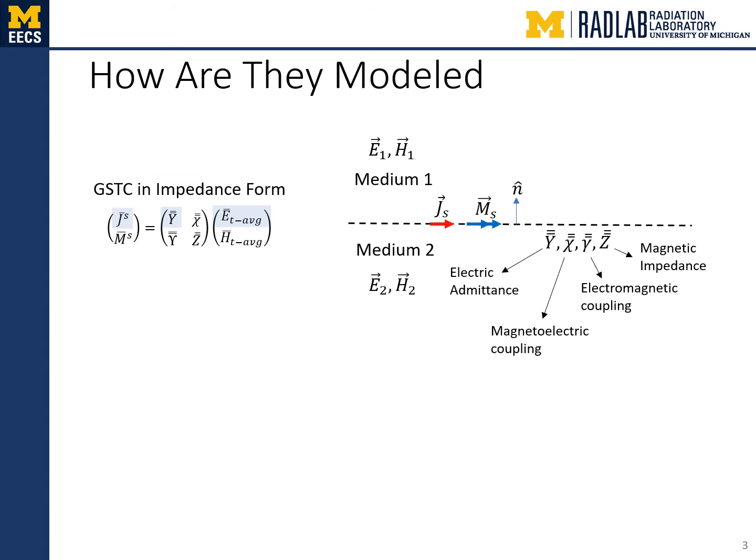The tensor sheet impedance connects the induced surface current densities to the tangential averaged fields. In a general bianisotropic metasurface, electric surface currents are excited by not only the tangential electric fields, but also magnetic fields. Similarly, magnetic surface currents are excited by both electric and magnetic fields. This leads to the matrix equation shown in the left half of the slide. This boundary condition is known as the generalized sheet transition condition, or GSTC. The figure on the right shows the GSTC separating two media. In medium 1, an electric field E1 and a magnetic field H1 exist. Similarly, in medium 2, an electric field E2 and a magnetic field H2 exist. At the interface between the two media, both electric and magnetic surface currents are supported. The tensors Y, chi, gamma, and Z connect the fields to the currents according to the GSTC.